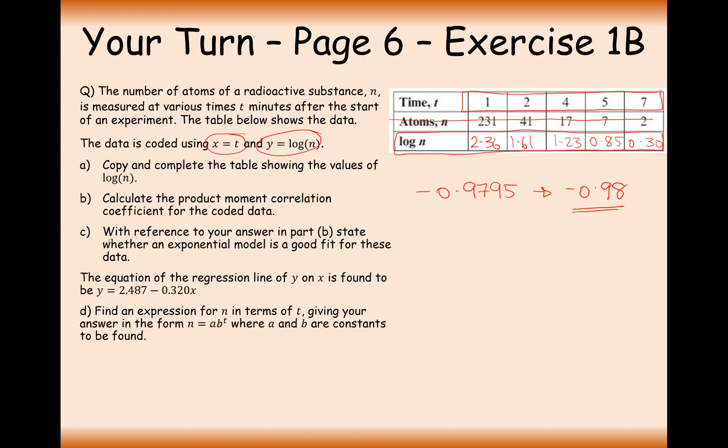With reference to your answer in part B, state whether the exponential model is a good fit for this data. Exponential model is an excellent fit for this set of data because the PMCC is minus 0.98, which is almost perfect negative correlation. And that's what you need to write for part C.